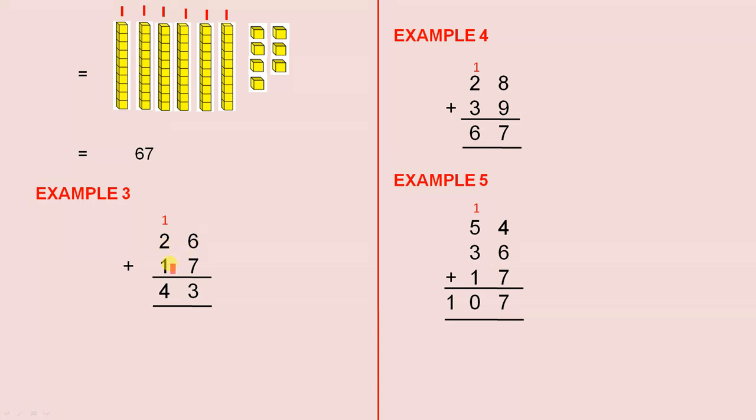Example 3, 26 plus 17. 6 plus 7 is 13, that gives you 3 units and 1 ten. 1 plus 2 plus 1 gives you 4, so the answer is 43.